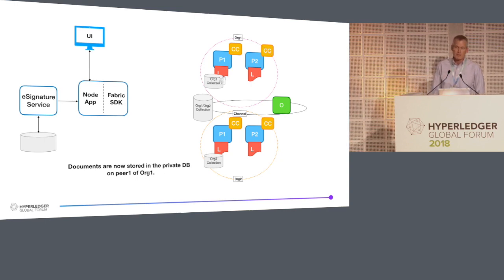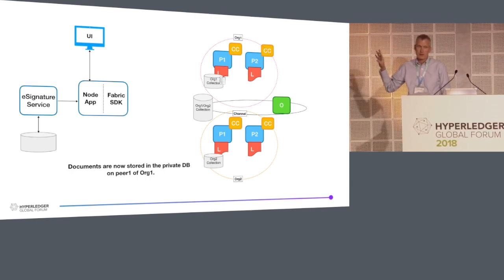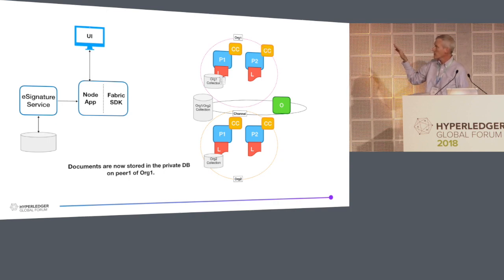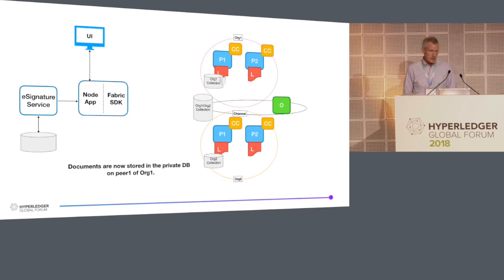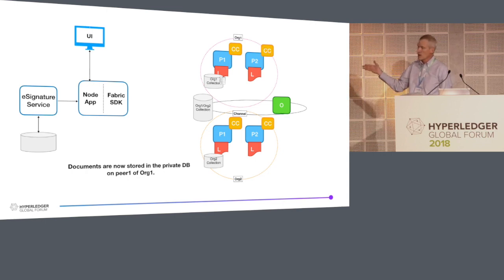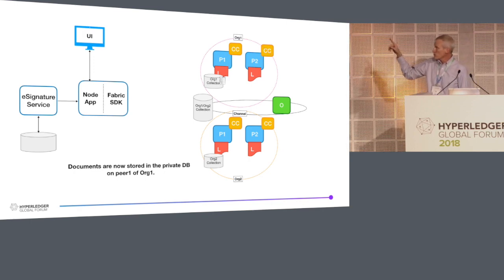Coming back out to the larger picture: at this point, we've got the document in the org1 collection. At this point, only org1 has access to it. A transaction that goes to one of the peers in org1 will be able to read that data. But if a transaction goes to one of the peers in org2, it will not be able to read the data. Our access control piece will control who has access, and you can open up access to things in different orgs. But even if you opened access to that document to a member of org2, they would still have to run the transaction through org1 in order to get access to the document.